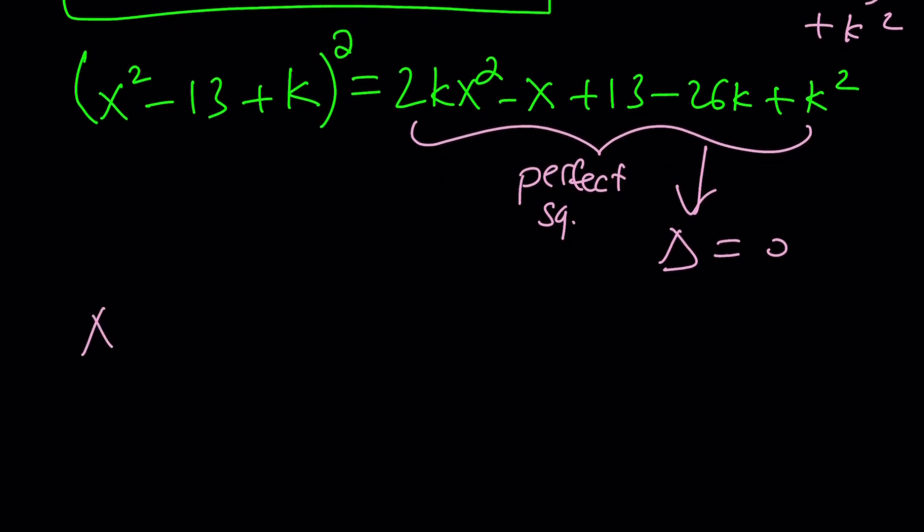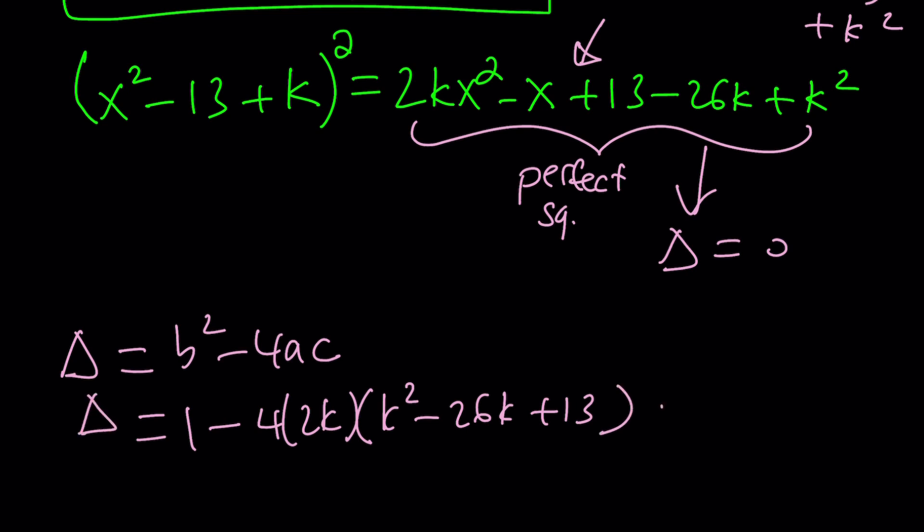So we're going to look at delta. Delta is b squared minus 4ac. What am I talking about? I just got stuck with the quadratic formula, but this is just part of the quadratic formula, right? So b squared minus 4ac for this equation right here, that'll be 1 minus 4 times a, a is 2k, and c is k squared minus 26k plus 13. And we want the delta to be 0 so that this can become a perfect square.